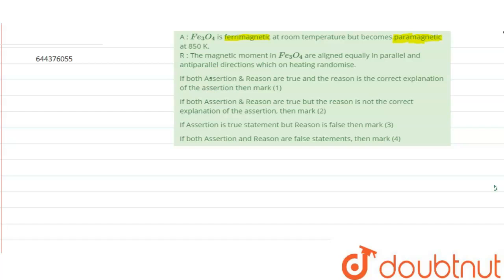Hello everyone, the question is: Fe3O4 is ferromagnetic at room temperature but becomes paramagnetic at 850 Kelvin. Let us understand this.